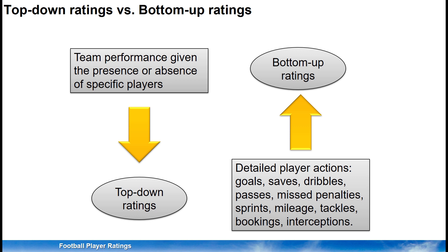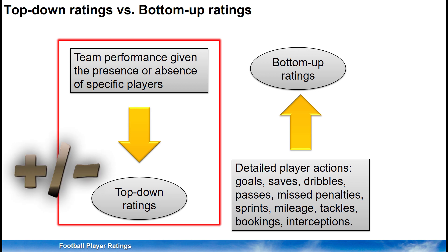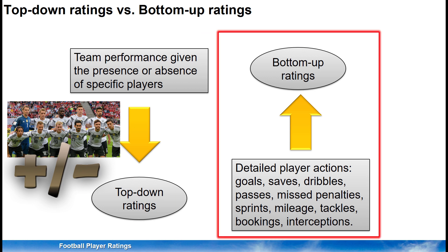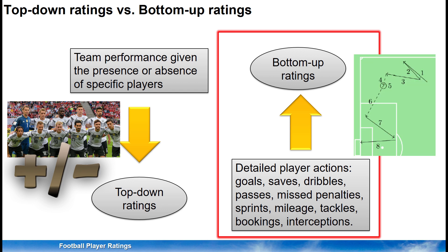To set the scene, let us first define what we mean by this. Top-down ratings are ratings such as plus-minus ratings, where the players are evaluated based on observing only how their team performs. The credit or blame for the team performance is then somehow distributed onto the players involved. Bottom-up ratings are more data intensive and require us to know all the individual actions performed by players during matches. We assign a value to all of the actions, and the evaluation of players is then based on the values of the actions that each player makes.